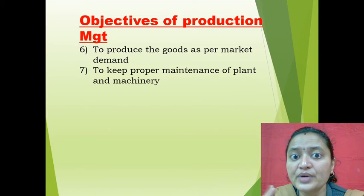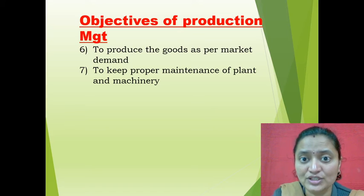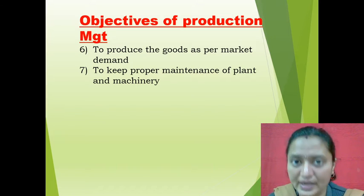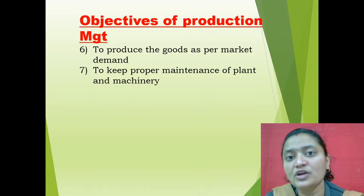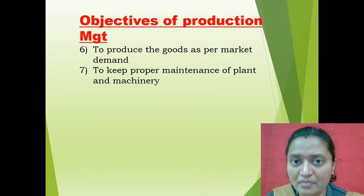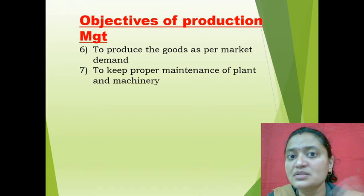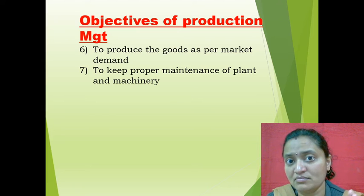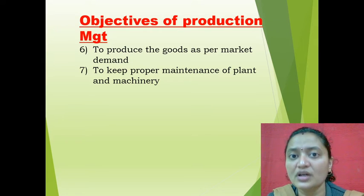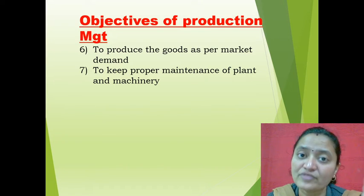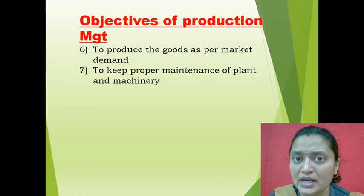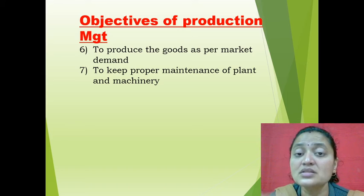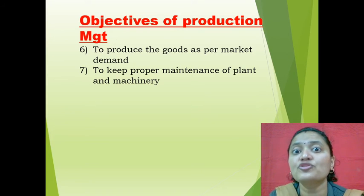The next objective is to produce the goods as per the market demand. The company which is producing or manufacturing products must do so as per the market demand. Customer tastes and preferences differ, so if a company sells a product that customers do not purchase, the company will go into loss. First, try to understand the market demand — whether customers demand that particular product — and only then make proper arrangements to sell those products in the market.